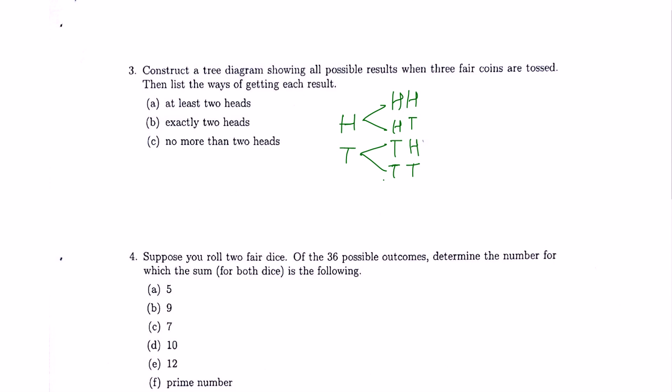So if we toss two coins then we have one, two, three, four possibilities. But we have three coins, so we need to extend further.